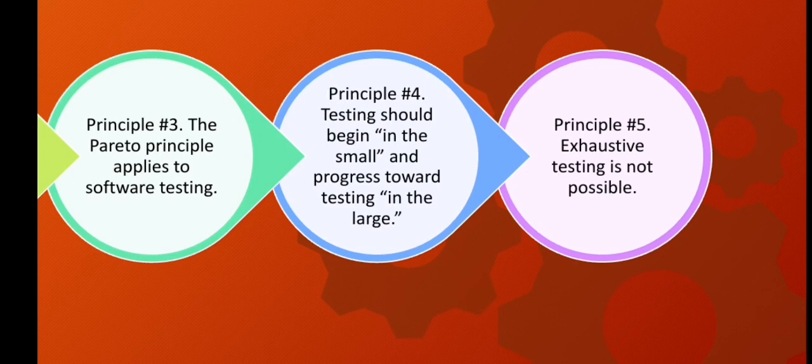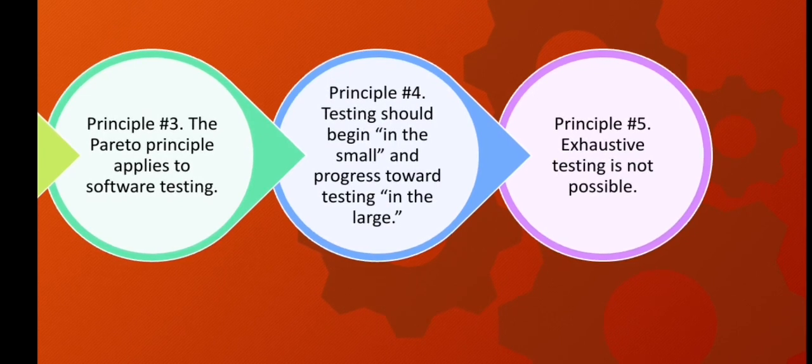Principle four: testing should begin in the small and progress toward testing in the large — test individual components first, then integrate the system. Principle five: exhaustive testing is not possible. Those are the five testing principles.